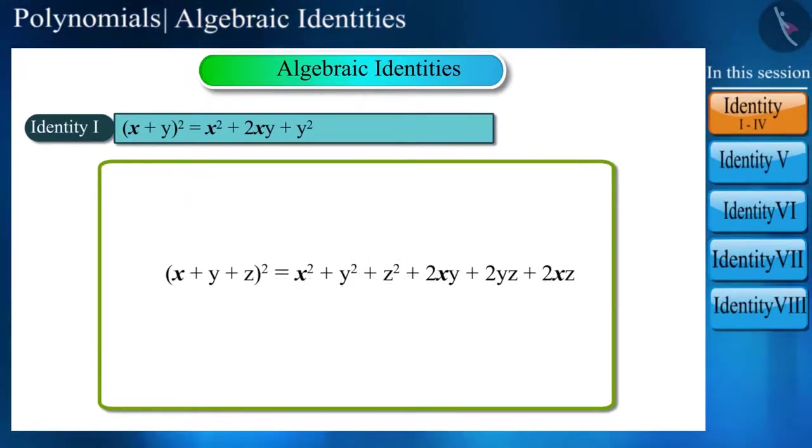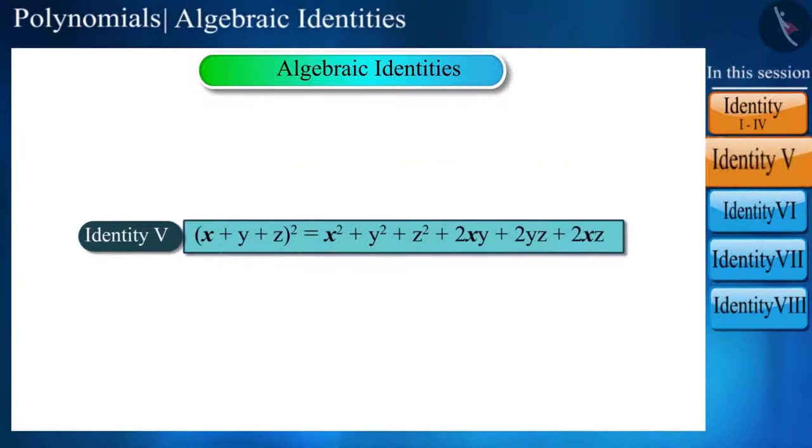We can remember it like this. In the square of a trinomial, there are three squares and three factors. And this is called identity 5.